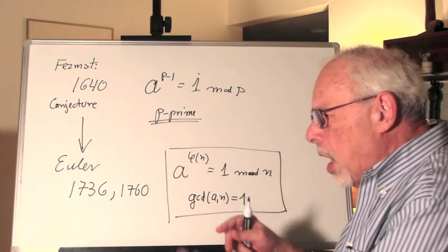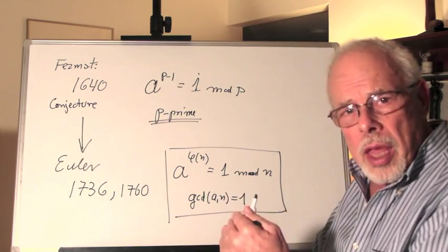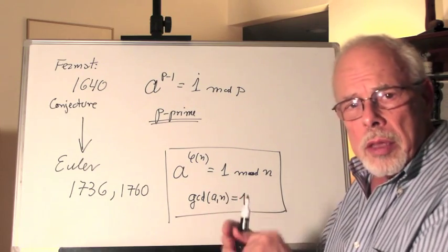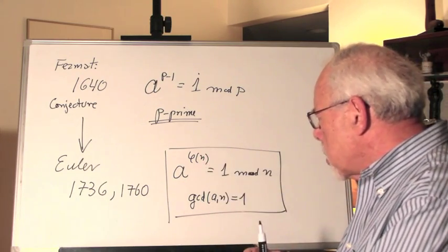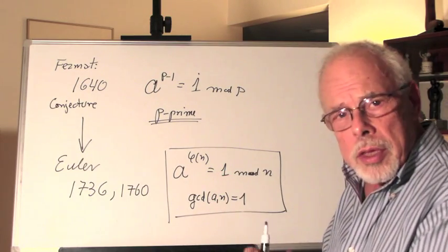is a function that counts how many numbers, smaller than n, are co-prime with n. And that's the relationship that he arrived at and proved.